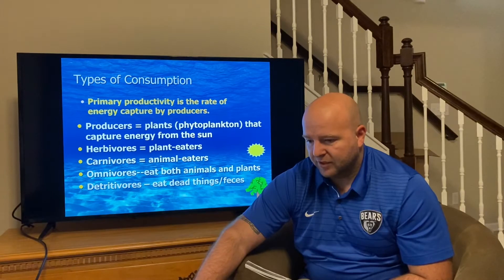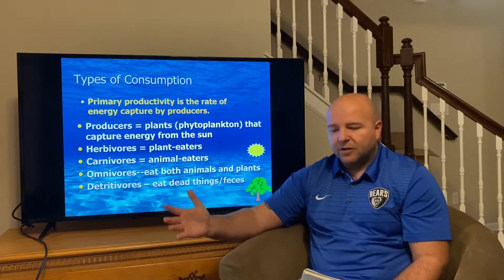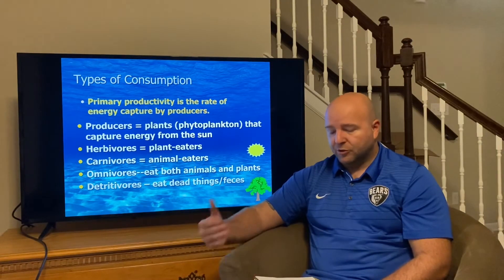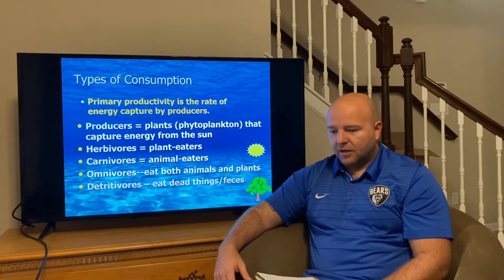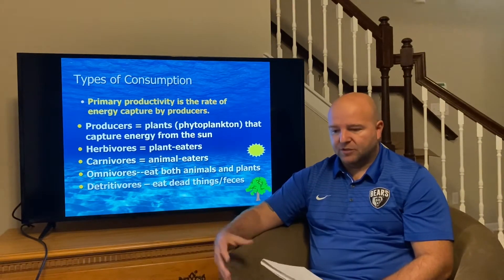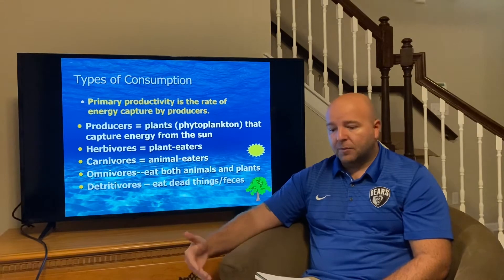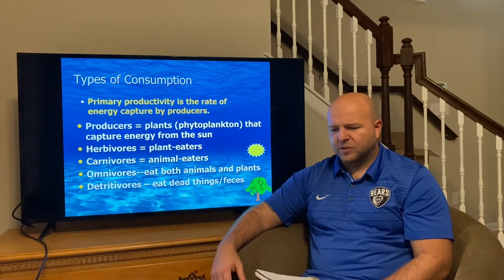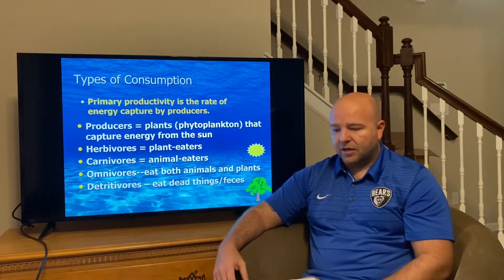Looking at our types of consumption — hopefully most of this is review. Producers are plants, including phytoplankton in marine ecosystems; these capture energy from the sun. Herbivores eat plants. Carnivores eat animals. Omnivores eat both animals and plants. And then our detritivores — sometimes called detritivores — are like bacteria that break down feces or dead things.